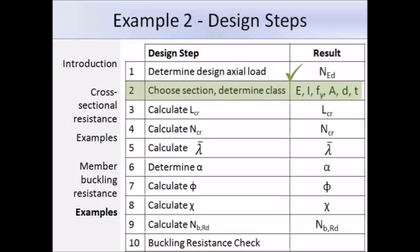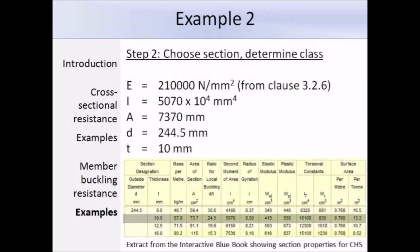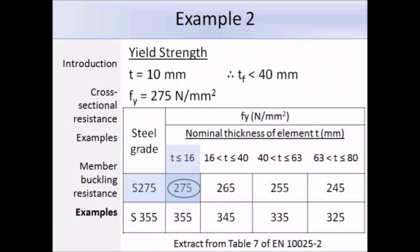Now we need to determine the section class. Here is a screenshot from the interactive blue book showing where we've got our values from. Our section is a 244.5 x 10 circular hollow section, and we need to work out the yield strength, which depends on the section thickness and the steel grade.